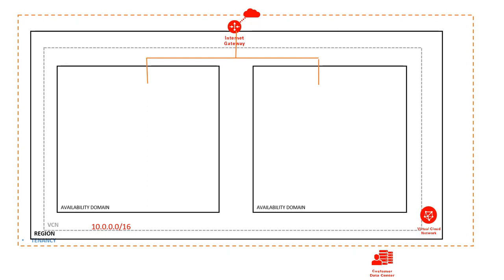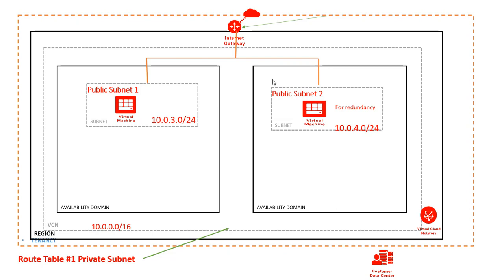Then we are going to add two route tables. The reason there are going to be two route tables is one is for your private subnet and the other one is for your public subnet. So there will be two: one is the private subnet route table and the second one is the public subnet route table. This is going to cover two public subnets in two different availability domains. The public route table will connect to the internet gateway.